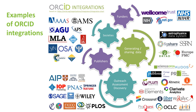Most of the important publishers require ORCID IDs as part of their submission systems. For example, Elsevier, Sage and Wiley. Societies such as AAAS and MLA are also integrated. This list grows rapidly each year.